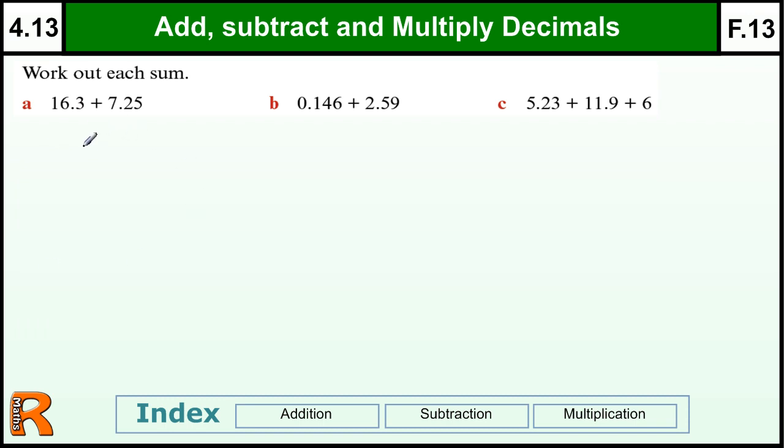OK, adding decimals, the only thing we've really got to remember here is to line up the decimal point. So when we've got the two numbers, they need to line up, and at any sort of spaces you've got, because of the way they line up, you should fill those in with zeros to make it easier to keep your columns correct. So if we put a zero in there, we've got five plus zero is five, two plus three is five, the point goes underneath. Six and seven is thirteen, carry one to get 23.55.